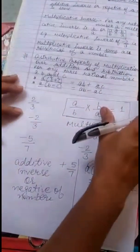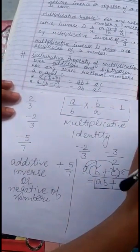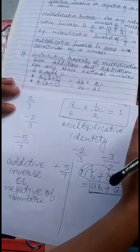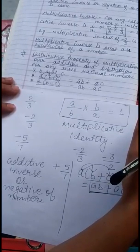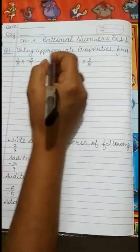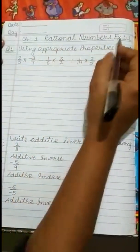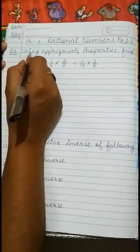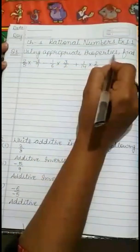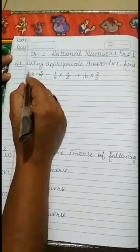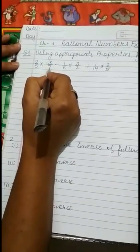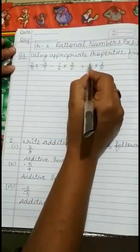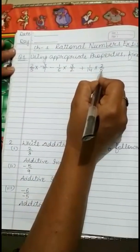So students, this is all for the exercise 1.1 introduction part. We will discuss exercise 1.1 in the next part. Carefully revise all the properties so that we can start the exercise. Good morning students. Today we are going to start exercise 1.1 of chapter number 1, Rational Numbers. Question number 1: using appropriate properties, find the value of 2 by 5 multiplied by minus 3 by 7, minus 1 by 6 multiplied by 3 by 2, plus 1 by 14 multiplied by 2 by 5.